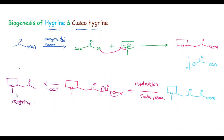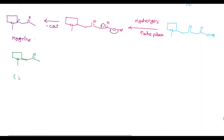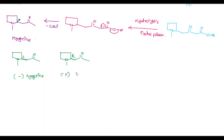When the configuration of the chiral carbon is S, that is, this group is above the plane, then this one is minus-hygrine. And when the substituent is below the plane, that is, the configuration is R, this is called plus-hygrine.